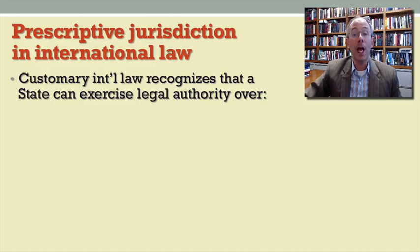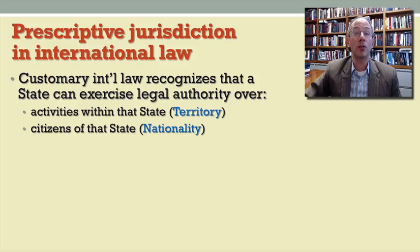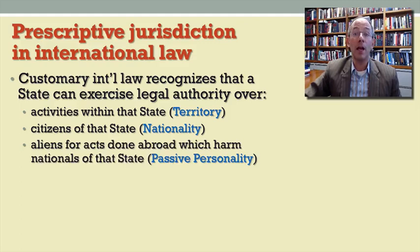Under customary international law, a state can exercise its authority in five distinct ways. First, territory — it should be unsurprising that a state can regulate activities within its borders, as that's one of the fundamental attributes of sovereignty. It should also be unremarkable that a state can apply its laws to its own citizens or nationals. In addition, a state can apply its laws outside its borders with respect to non-nationals if the conduct injures its own citizens — this is known as the passive personality principle.